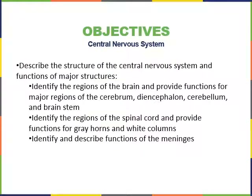We will cover the following study objectives: to describe the structure of the central nervous system and functions of the major structures; identify regions of the brain and provide functions for major regions within the cerebrum, diencephalon, cerebellum, and brainstem; identify regions of the spinal cord and provide functions for gray horns and white columns; and identify and describe the functions of the meninges.